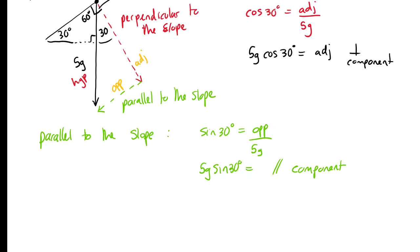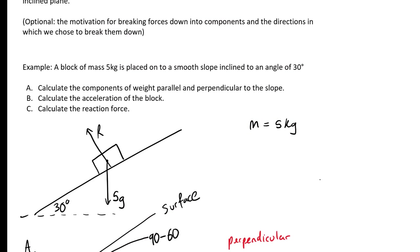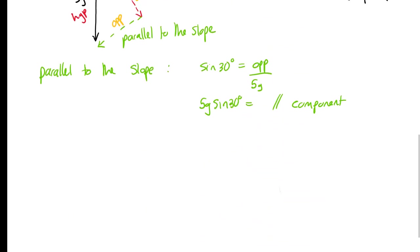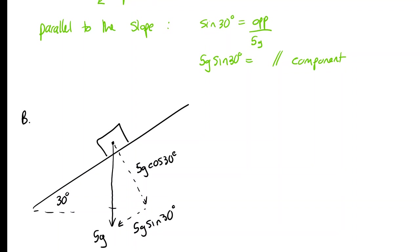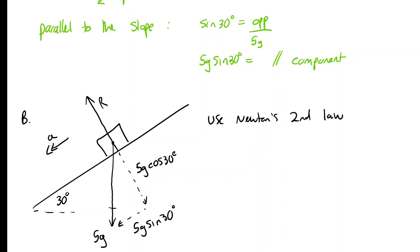Part b: calculate the acceleration of the block. We redraw the diagram with the slope at 30 degrees. Since there is no friction on this smooth surface the object must accelerate down the slope. We apply Newton's second law along the slope — working down the slope to follow the acceleration. The only force acting down the slope is 5g sin 30°, which is the only component acting in that direction.